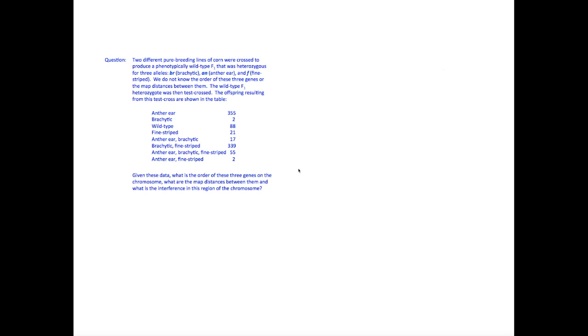First, let's read through the problem, which uses data originally reported by R.A. Emerson, an American geneticist. Two different pure-breeding lines of corn were crossed to produce a phenotypically wild-type F1 that was heterozygous for three alleles: BR, AN, and F. We do not know the order of these three genes or the map distances between them.